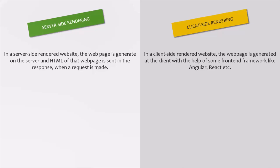When we request a web page from the server, the server generates some HTML along with CSS and returns it in the response to the browser. The browser then renders that HTML and CSS and displays a UI accordingly to the user. Here, the HTML and CSS was generated at the server and sent back to the client in the response. So this is called server-side rendering, because the web page was created on the server and then sent in the response.